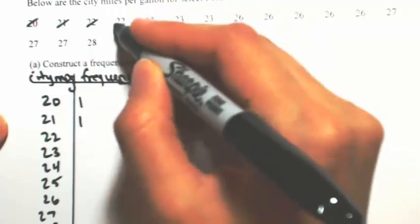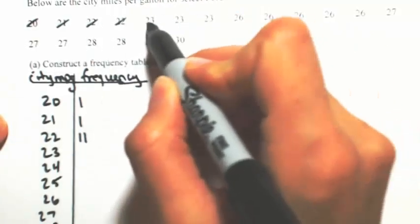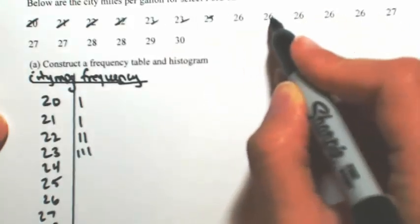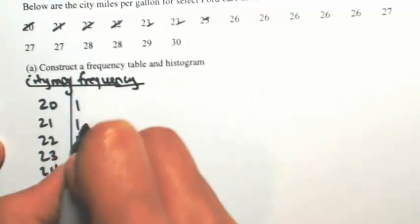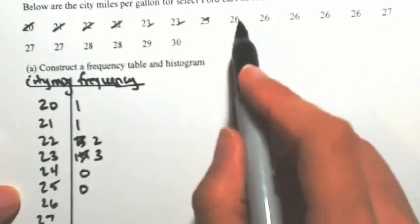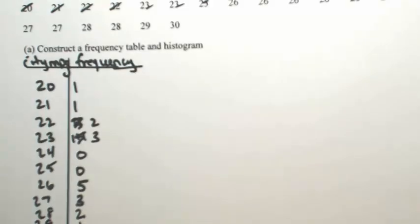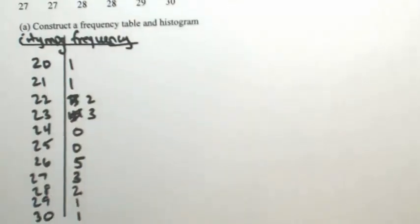I got 1 twenty, 1 twenty-one, 2 twenty-twos, 3 twenty-threes, 1, 2, 3, 4, 5 twenty-sixes, 3 twenty-sevens, 2 twenty-eights, 1 twenty-nine, 1 thirty. Since they were in order, that made that a lot easier.